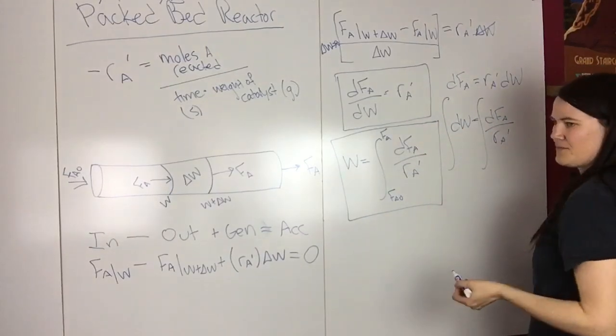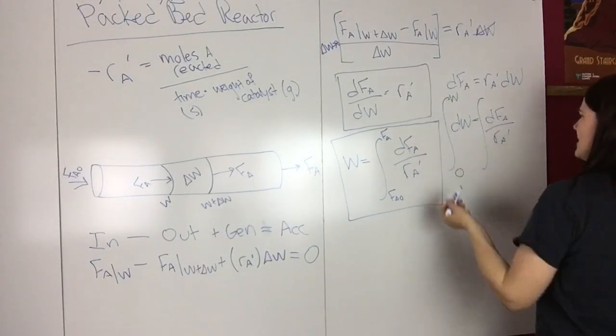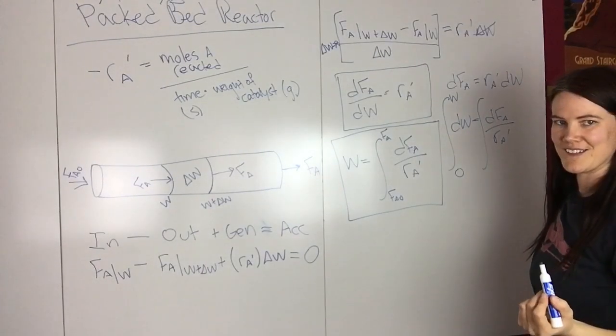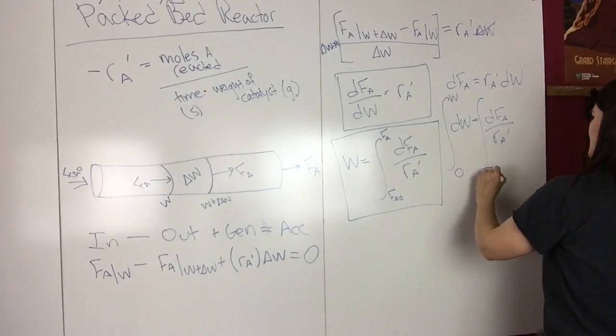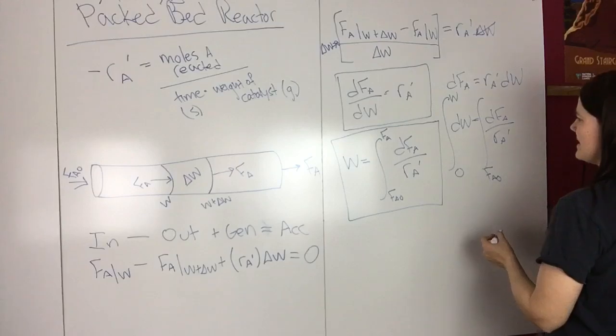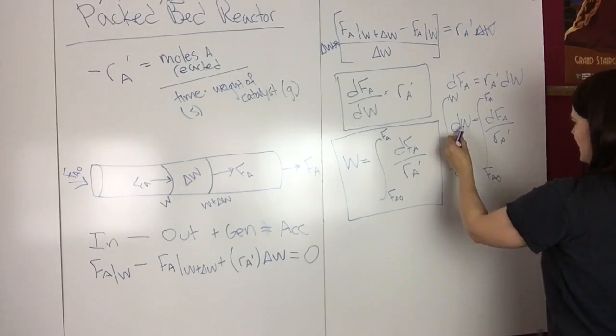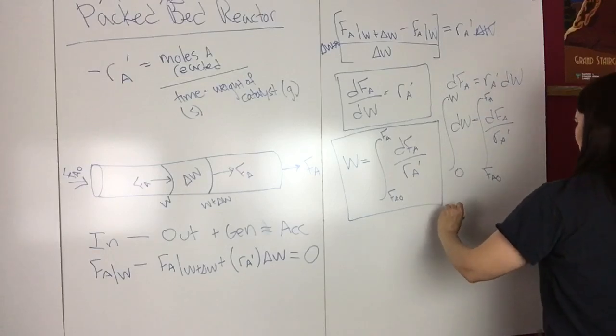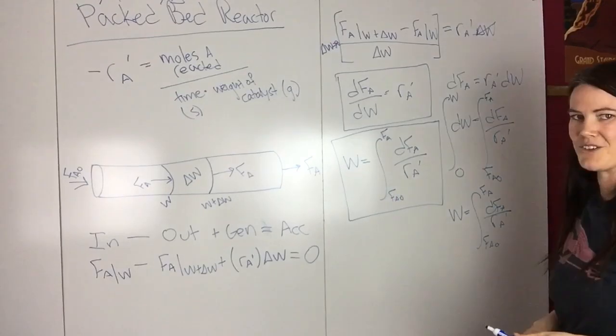And so the weight is probably going to be from zero to whatever weight, and then your molar flow rate is going to be F_A naught to F_A, so then going ahead and doing the math on this, you end up with W equals the integral from F_A naught to F_A of dF_A over R_A prime, so then you end up with that equation.